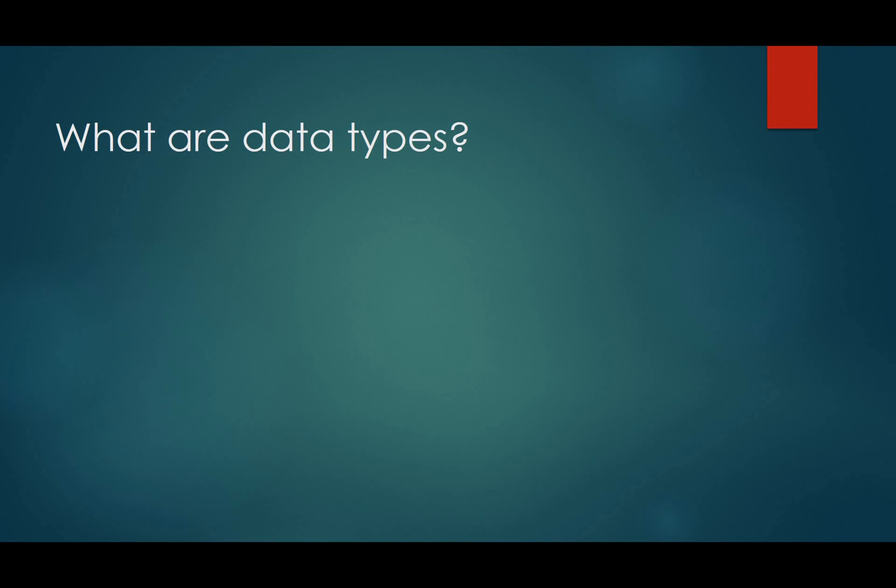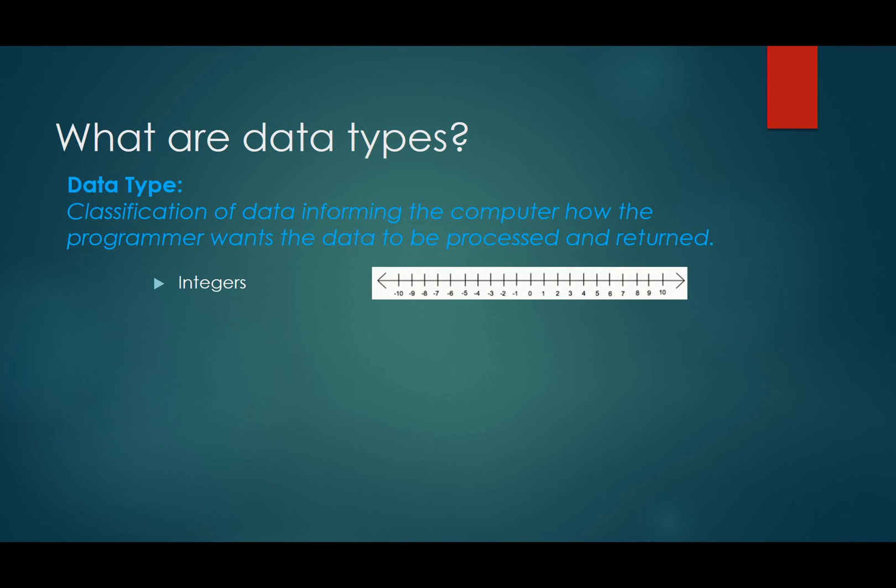So what are data types? In a nutshell, they're just a classification of data informing the computer how the programmer wants the data to be processed and returned. Obviously, there are certain types of data that will be mathematically changed depending on what you're doing, and they will be returned in a certain way depending on what type of data it is. So there's a couple different types that we're going to be talking about. These are the fundamental ones, the very basic ones.